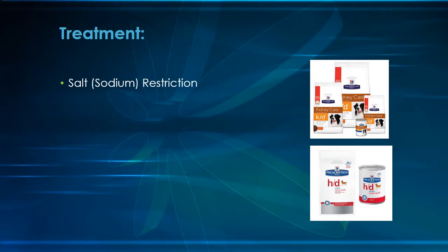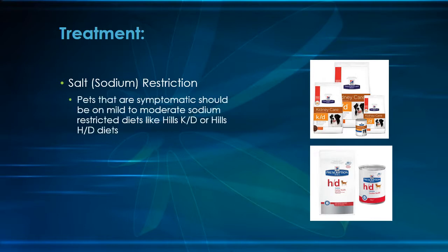Dogs in stages two through four should have diets restricted in sodium. We generally start with Hill's KD, or kidney diet, which has moderate salt restriction. As the disease progresses, we may move to Hill's HD, or heart diet, for more sodium restriction. Pets in heart failure cannot tolerate sudden infusions of salt, so we must eliminate all salty snacks as well.